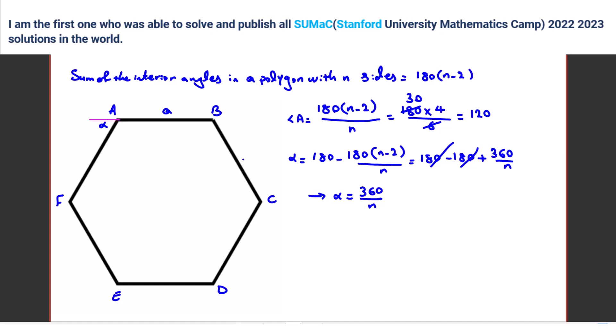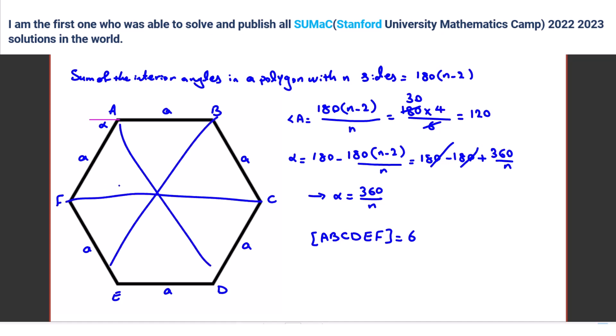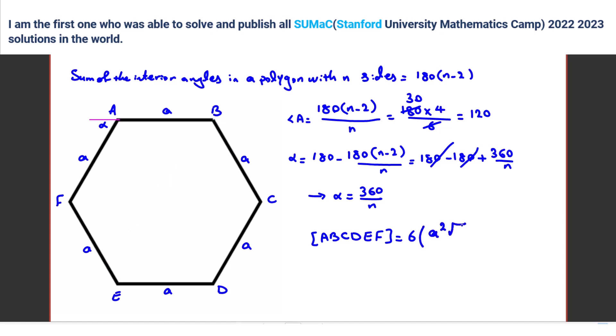Suppose the side length is A — so all sides are A. Calculate the area of hexagon ABCDEF in terms of A. We can split it into six equilateral triangles. So the area would be six times A squared times root 3 over 4. Good job.